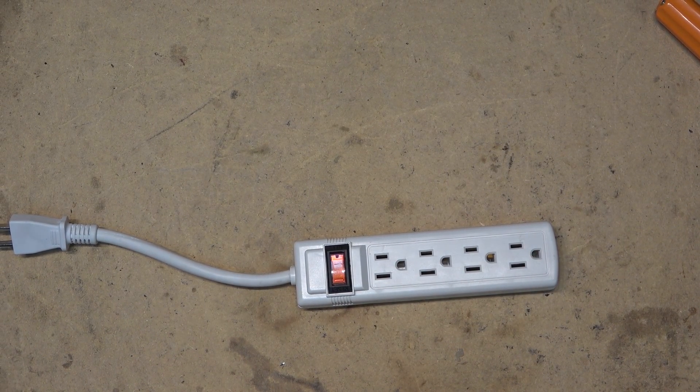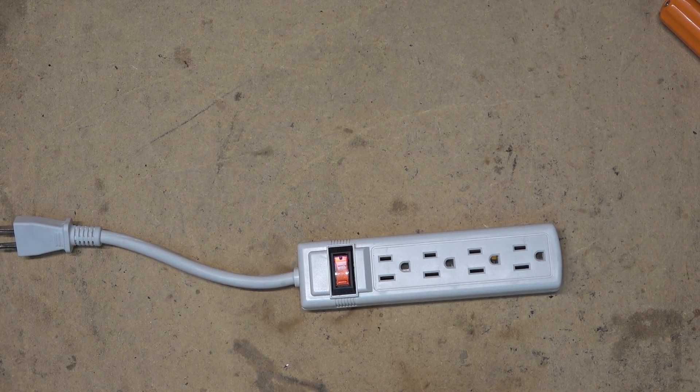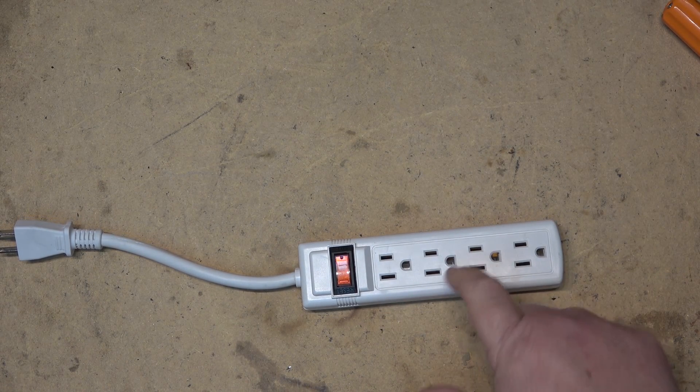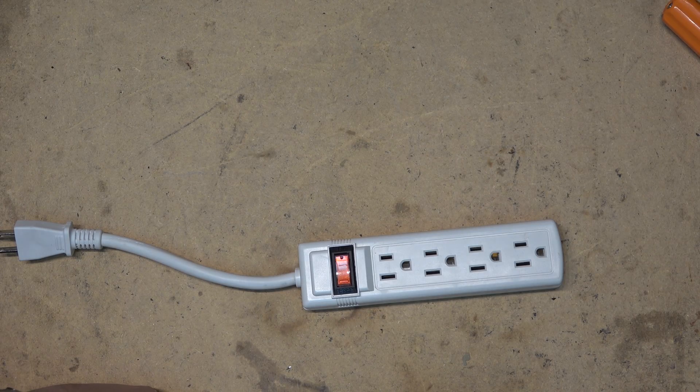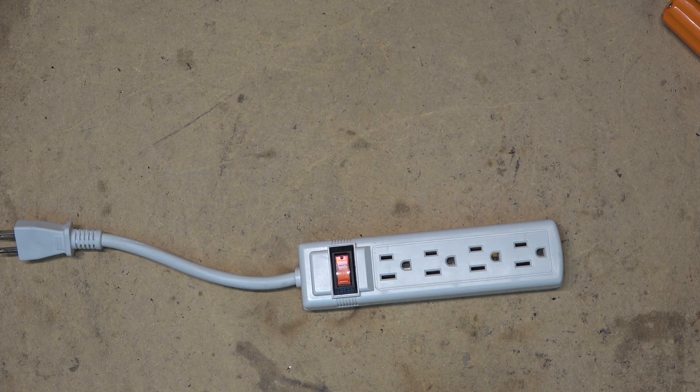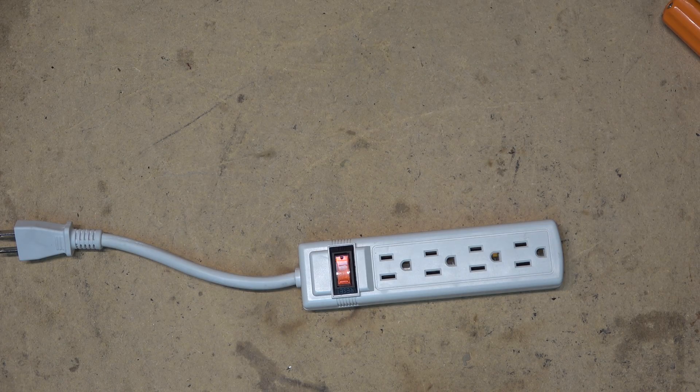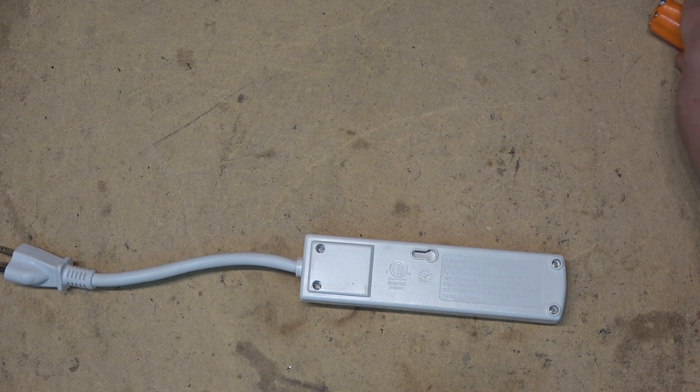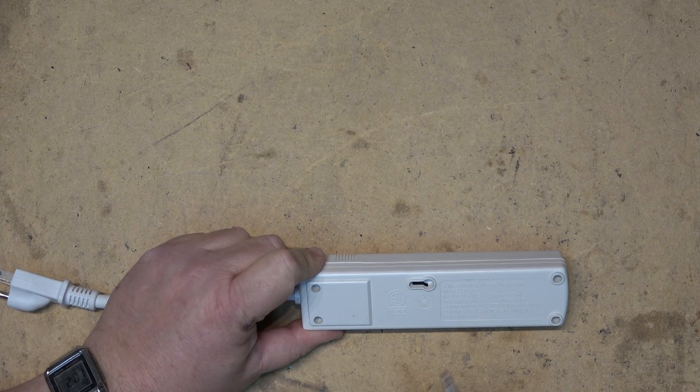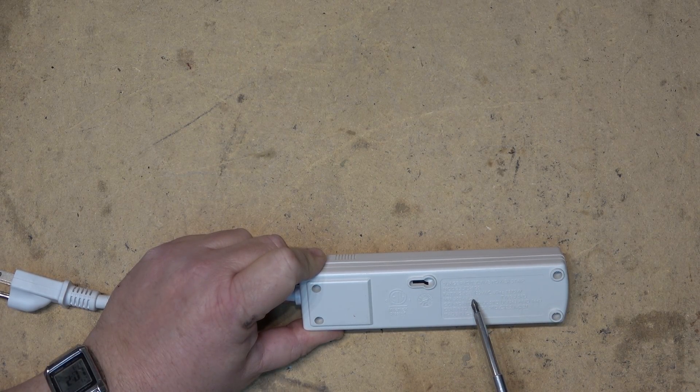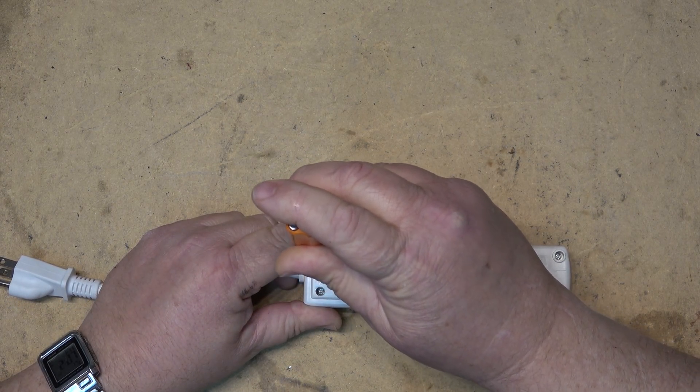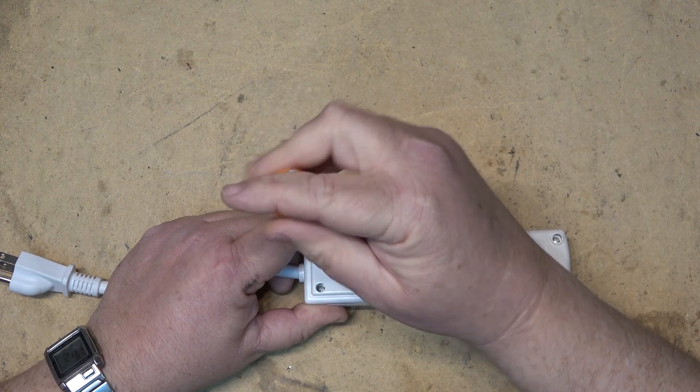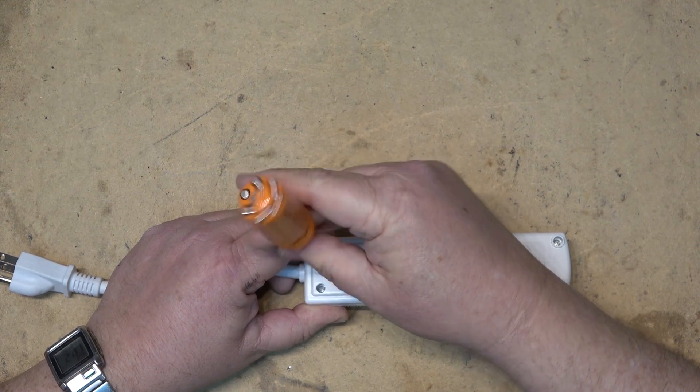We're going to start out doing some forensics because this is a little power bar that apparently went boom. Someone plugged something into it that drew a little bit too much current and everything went boom. Now it says on here that it's rated 15 amps, 1875 watts. What was plugged into this was a central vac and it blew up apparently, so let's see what blew up in it.